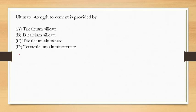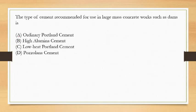Next question: ultimate strength to cement is provided by? The options are tricalcium silicate, dicalcium silicate, tricalcium aluminate, and tetracalcium aluminoferrite. These are known as the Box compounds. The ultimate strength, which is developed in the later part, is always provided by dicalcium silicate. So the answer is option B.